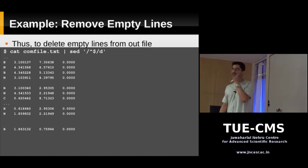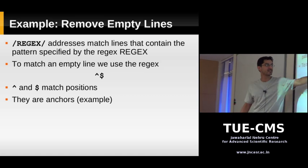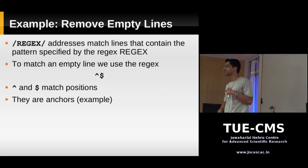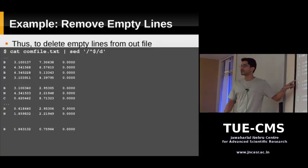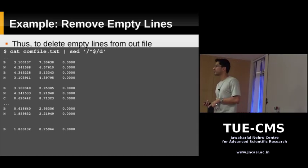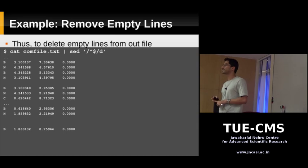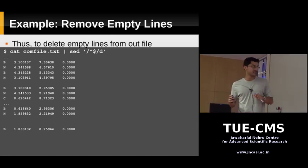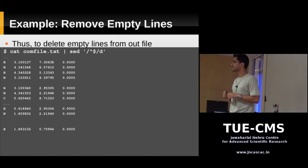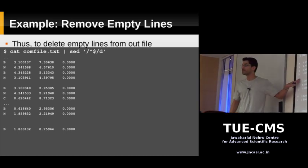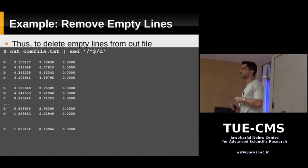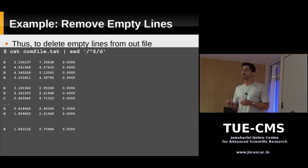Why didn't it remove some lines? There might be some tabs or spaces there. We're looking for a beginning of line and end of line with nothing in between. If the regular expression is not matching, something is there on those lines — it could be spaces or tabs. Spaces and tabs and a few other characters are called whitespace characters. They don't show up on your screen and when you print they don't show up, but they're actually stored in the file.